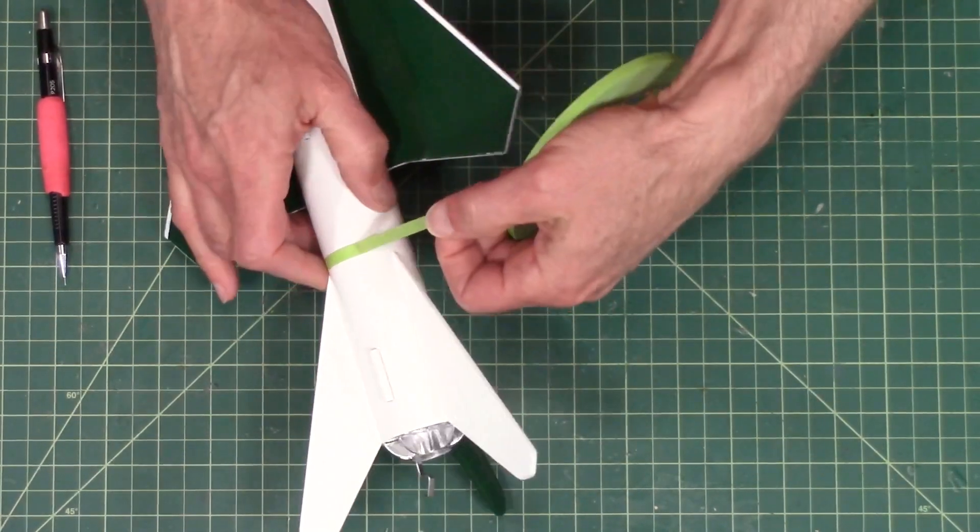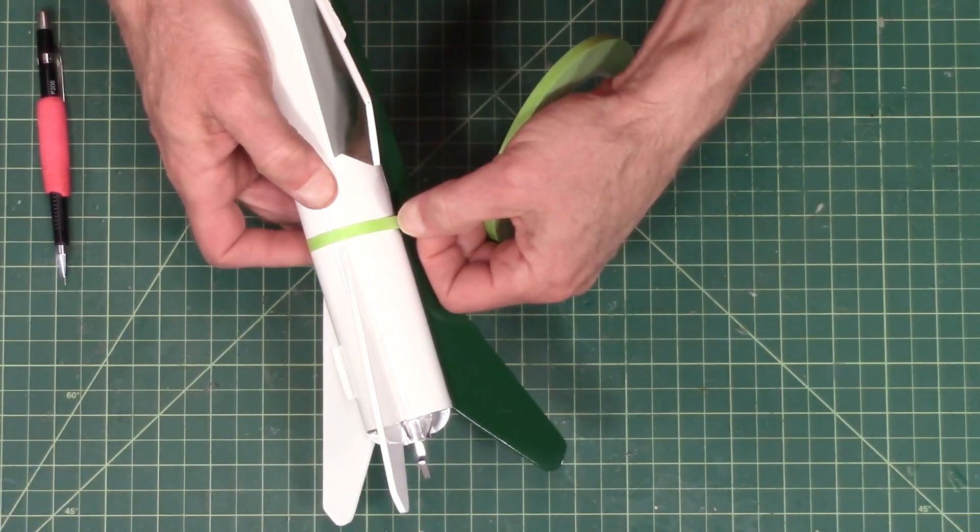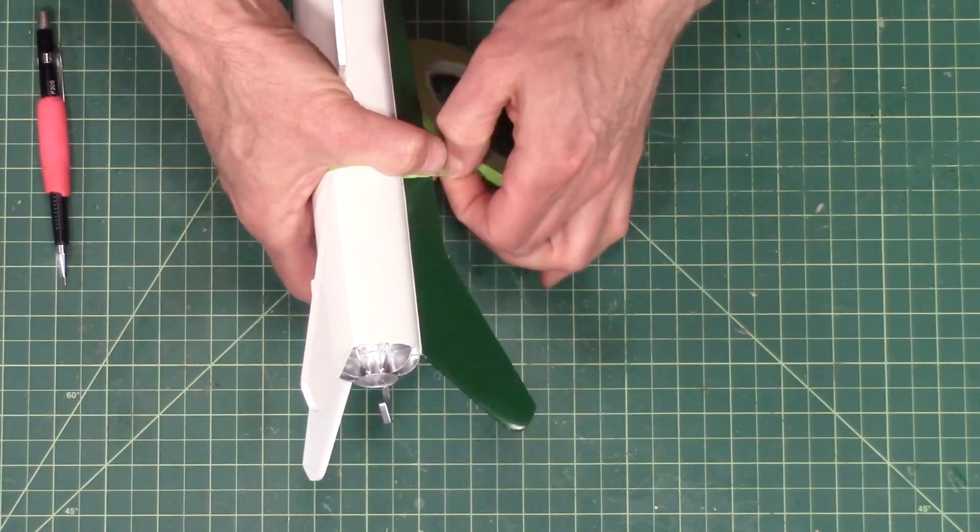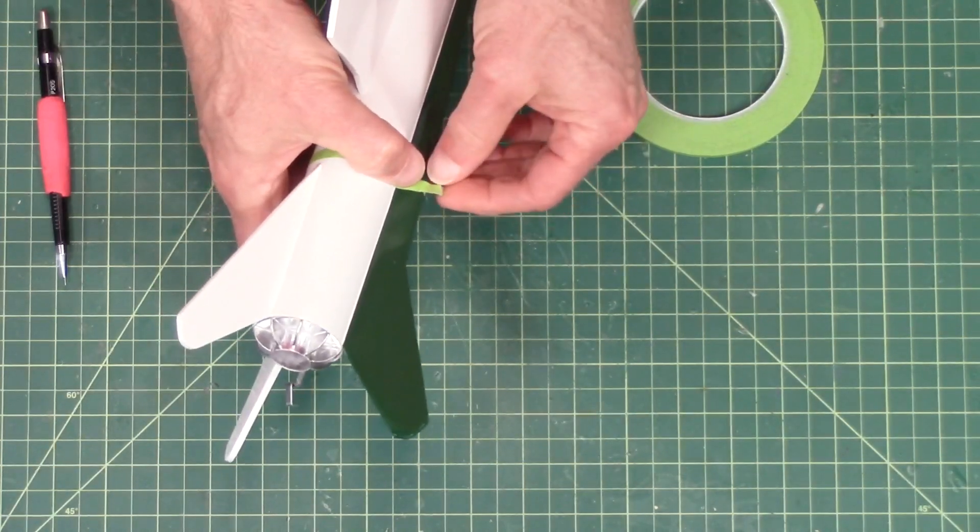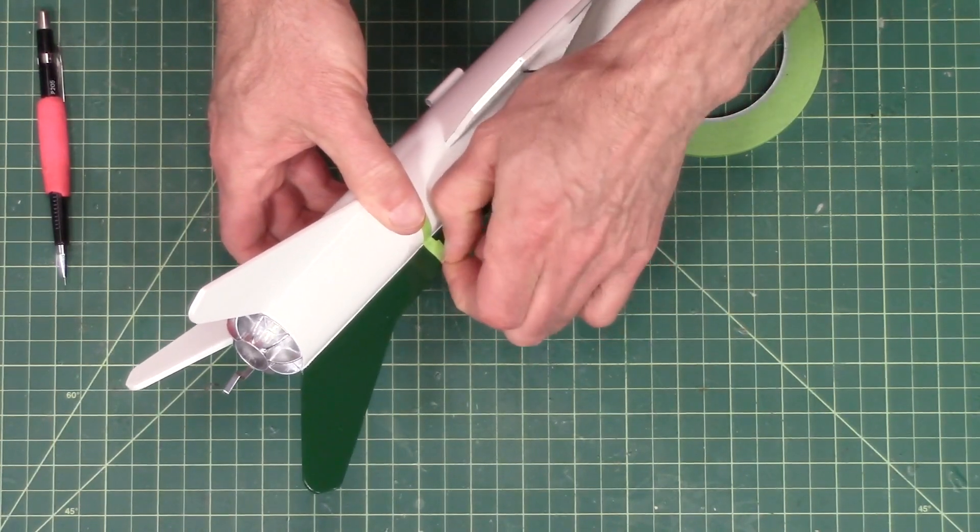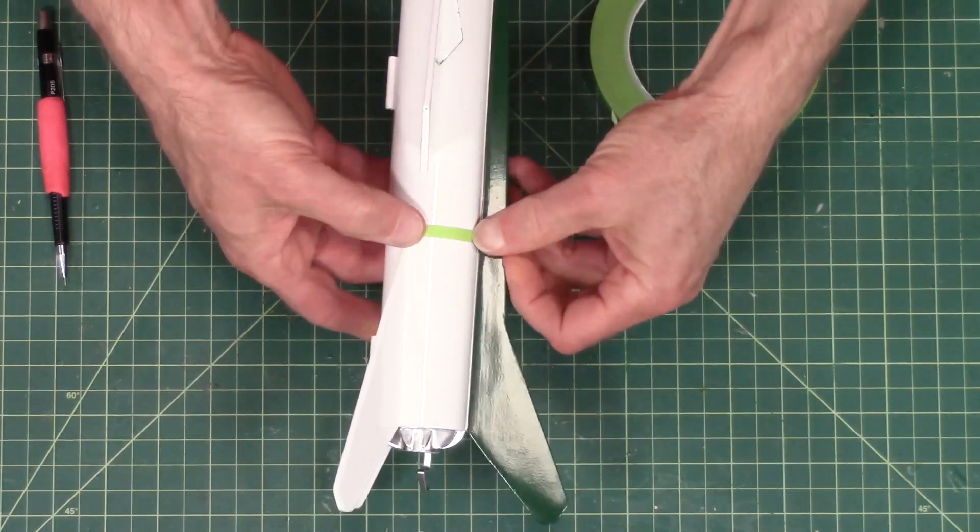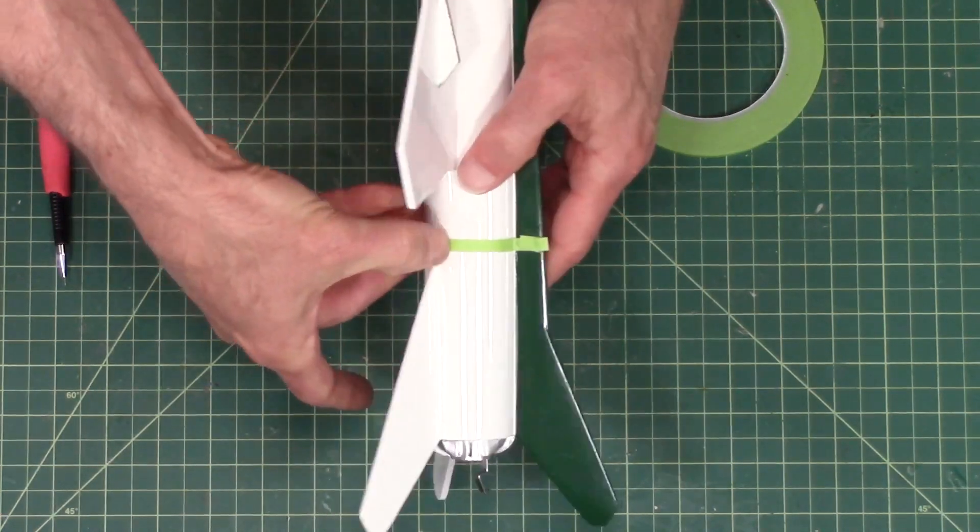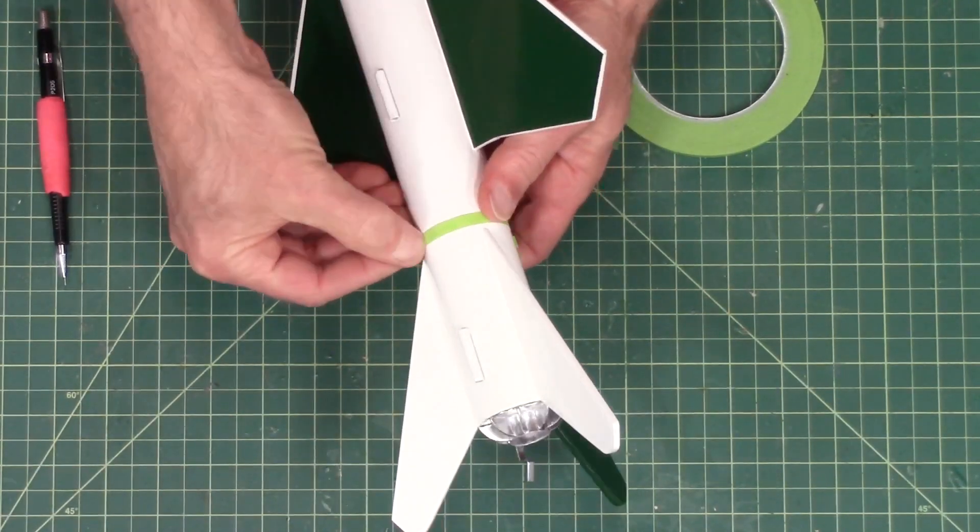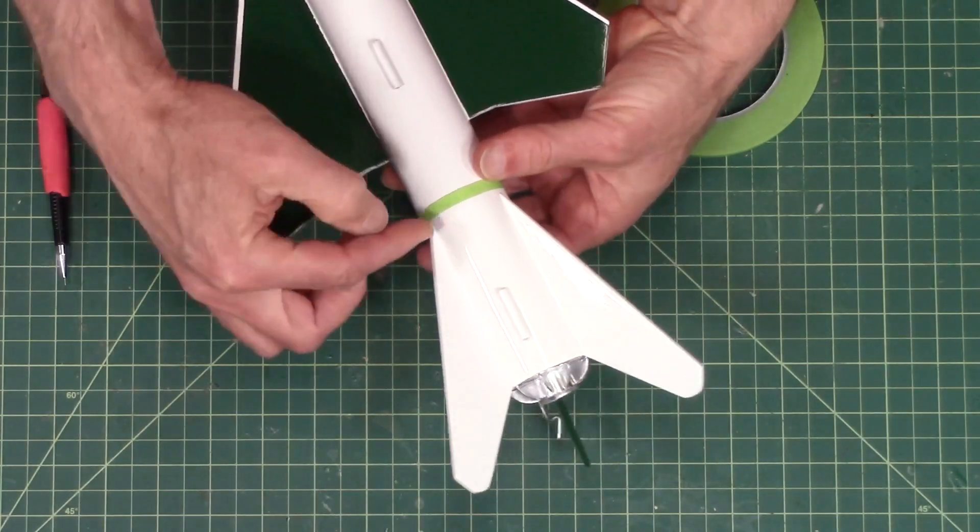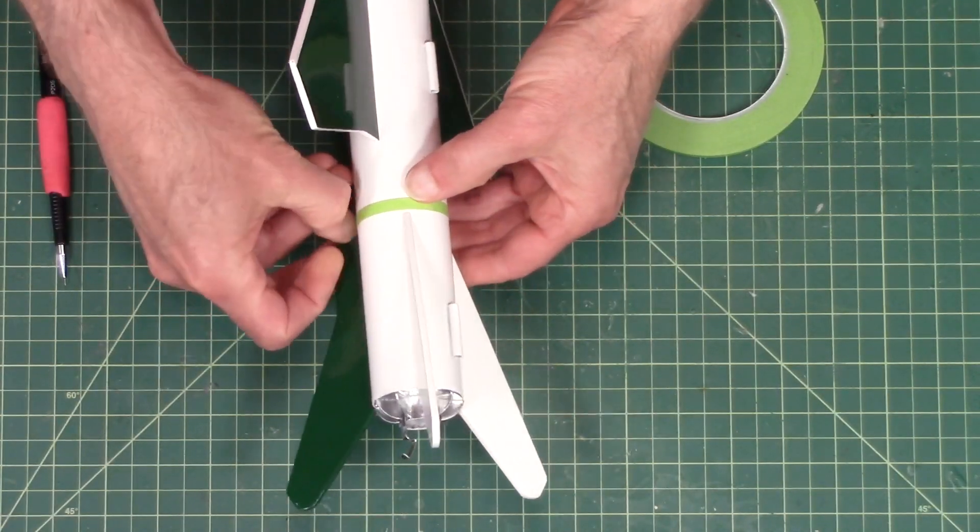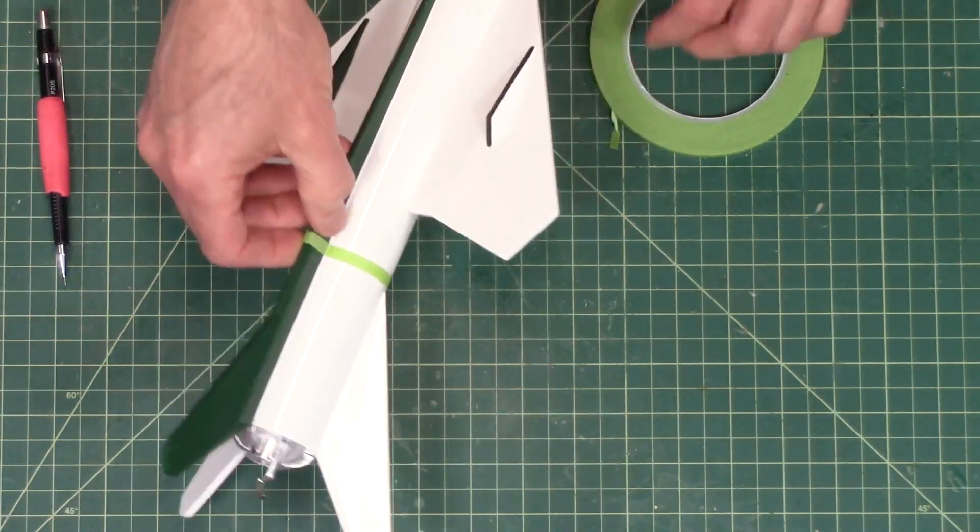And so I'm going to do the same thing on this side. And you really want to burnish down that edge so that the paint doesn't work underneath there. Although this one's not so critical because it's half hidden with a decal and my decal is actually going to go over the top of it. So it's not too critical but you know it's always good practice to do it right.